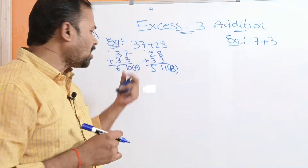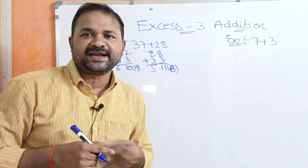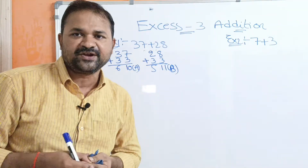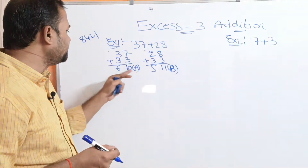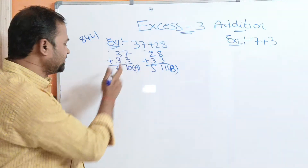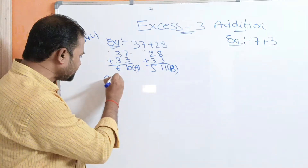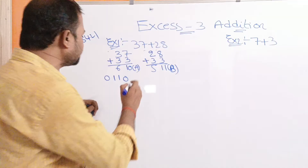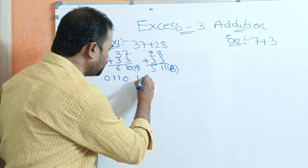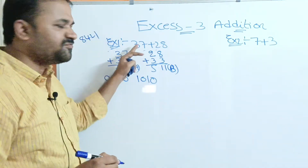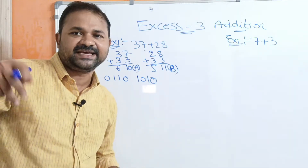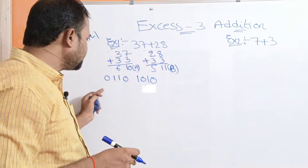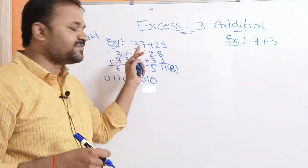Now we need to perform the addition operation on these two XS3 numbers. Let us represent the numbers in binary notation using the 8-4-2-1 notation. The digits of 37 in XS3 are 6 and 10. 6 in binary is 0110, and 10 in binary is 1010. So 37 in XS3 binary is 0110 1010.